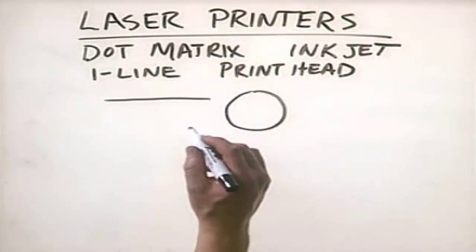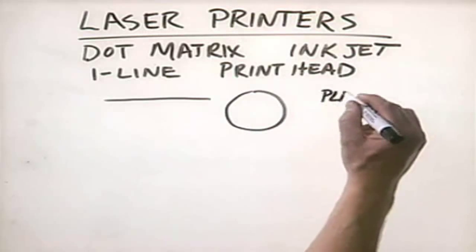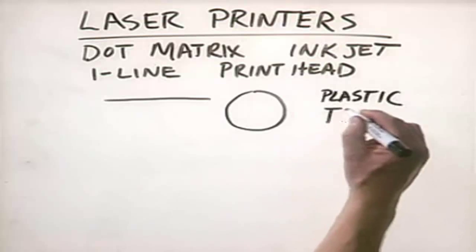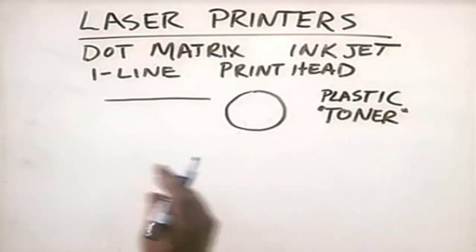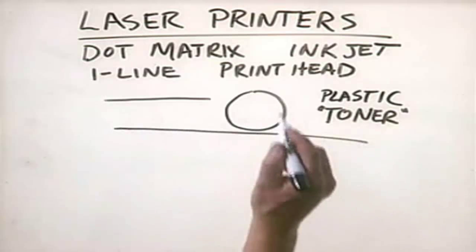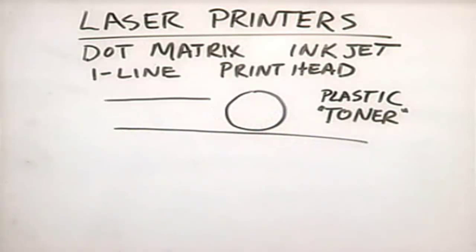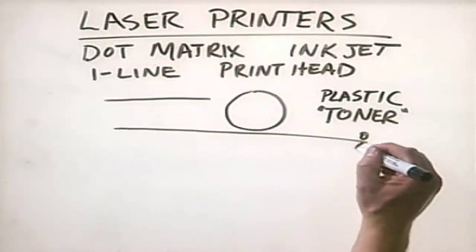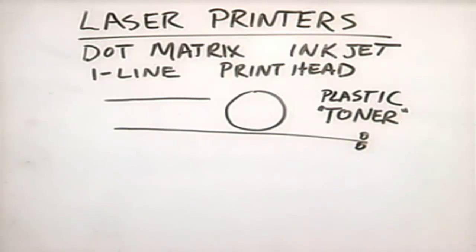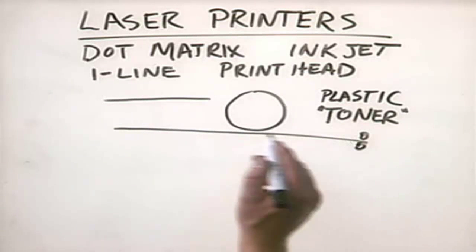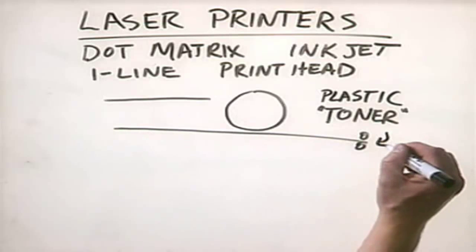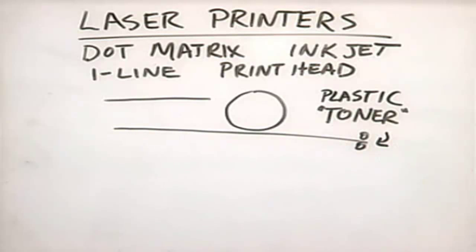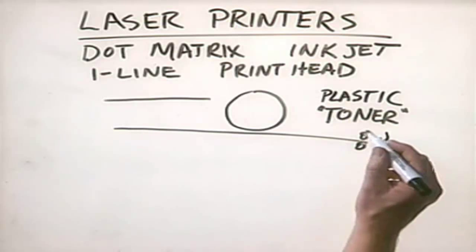Because the drum is charged we can transfer ground up plastic called toner onto the surface of the drum, run a piece of paper underneath it, transfer the toner to the paper, and then run the paper between some heated wires called the fuser to actually melt the toner into place. Have you ever noticed that documents printed on a laser printer come out very warm? That's because of these fusers that melt the plastic toner onto the paper itself.